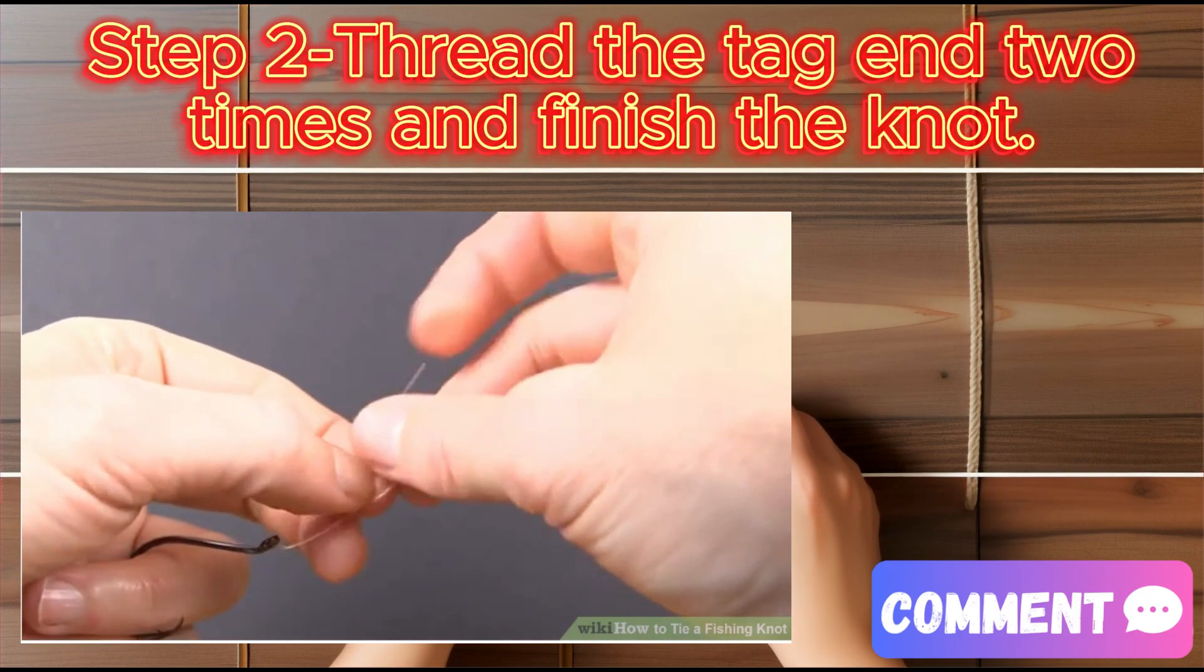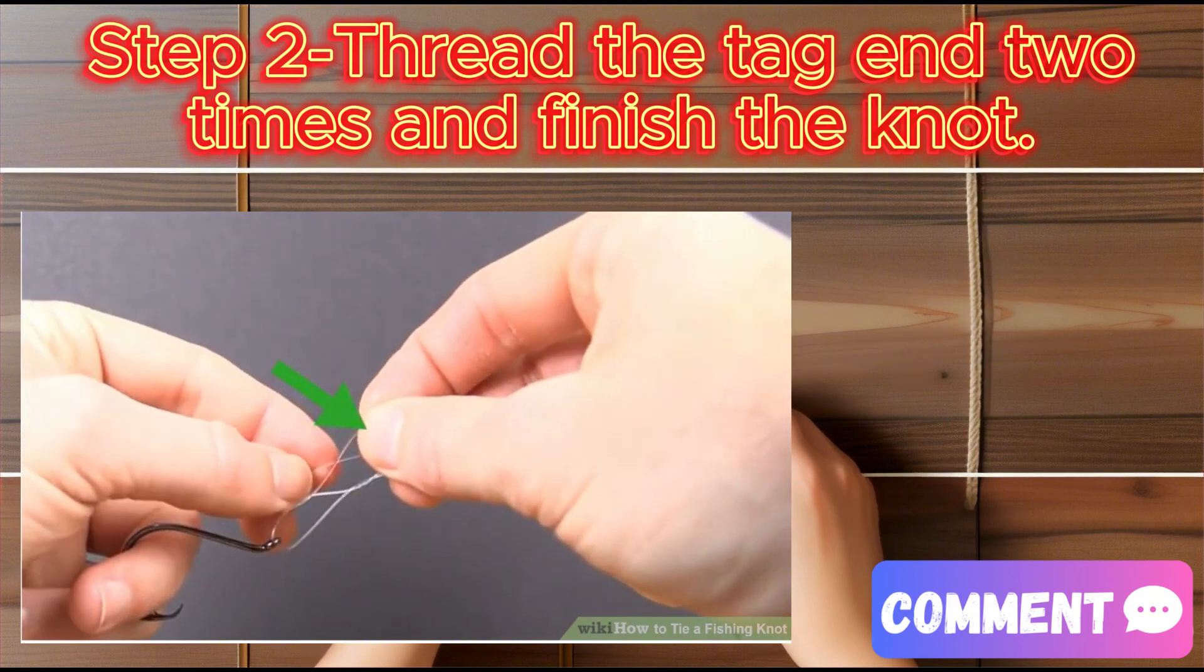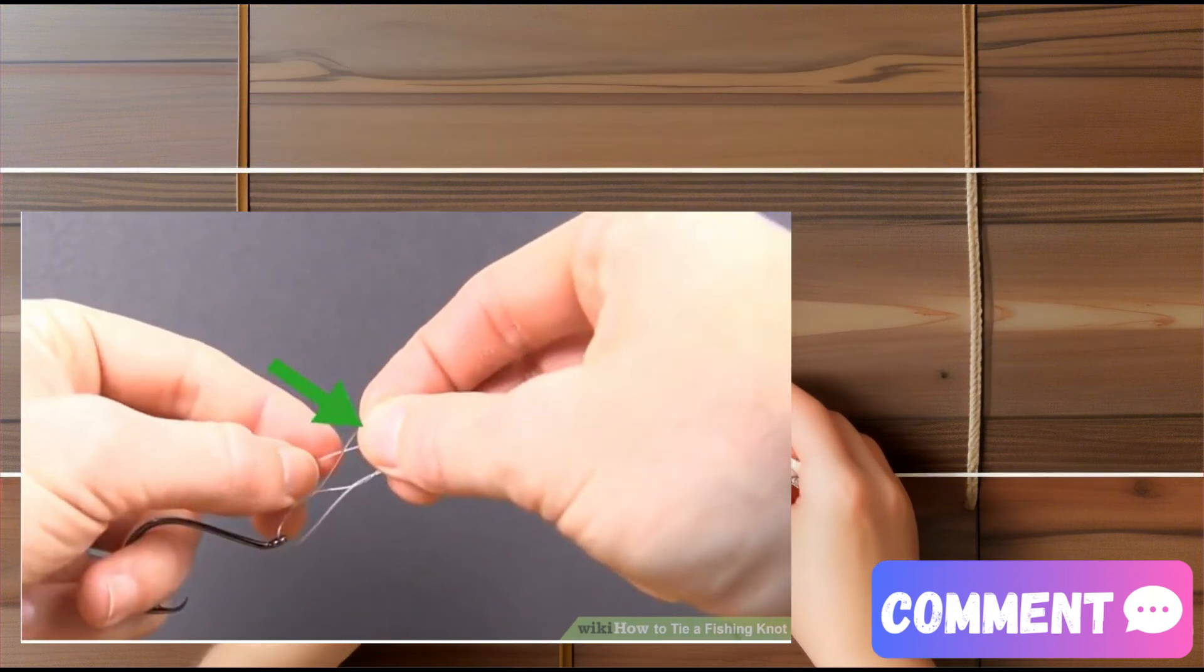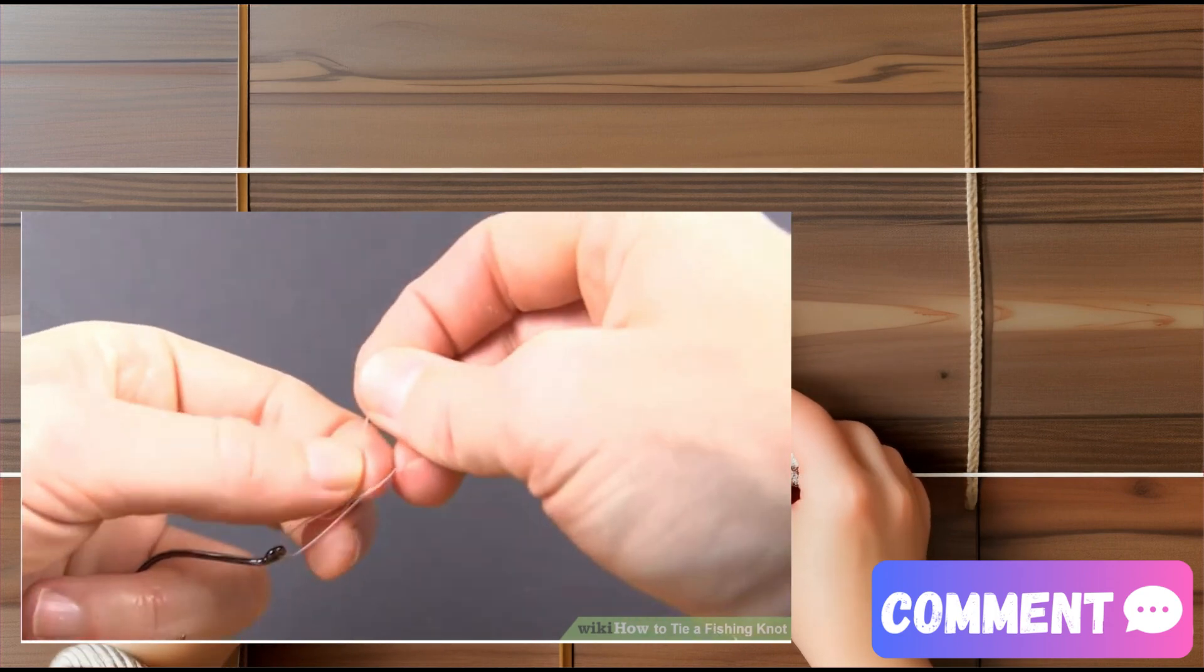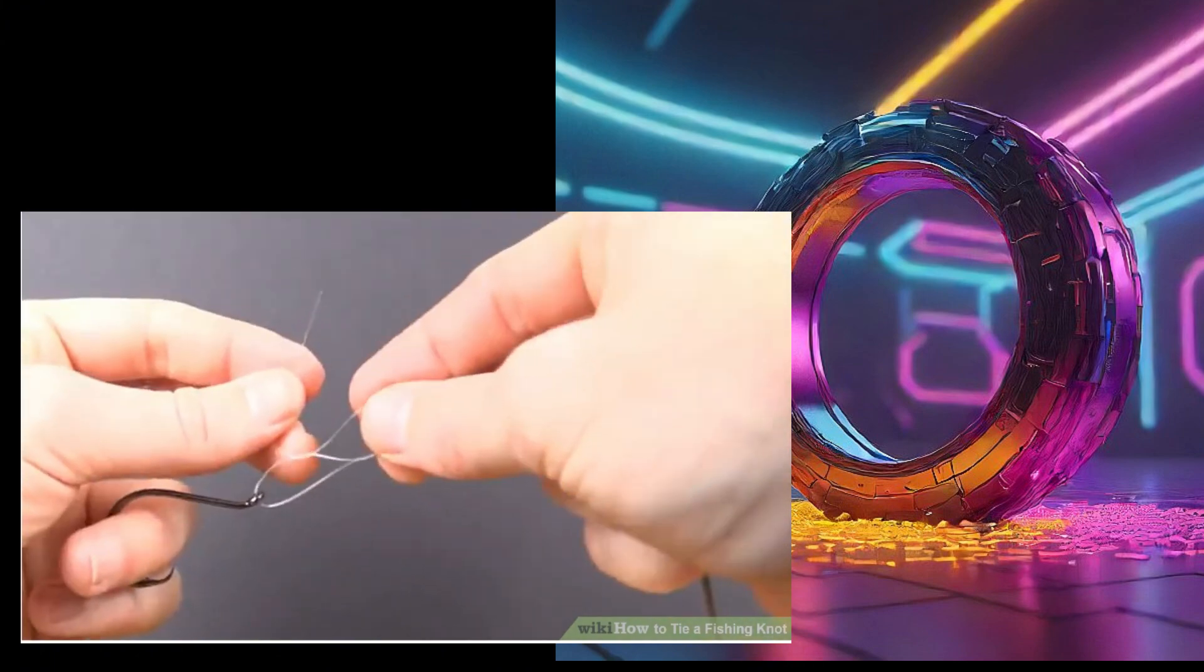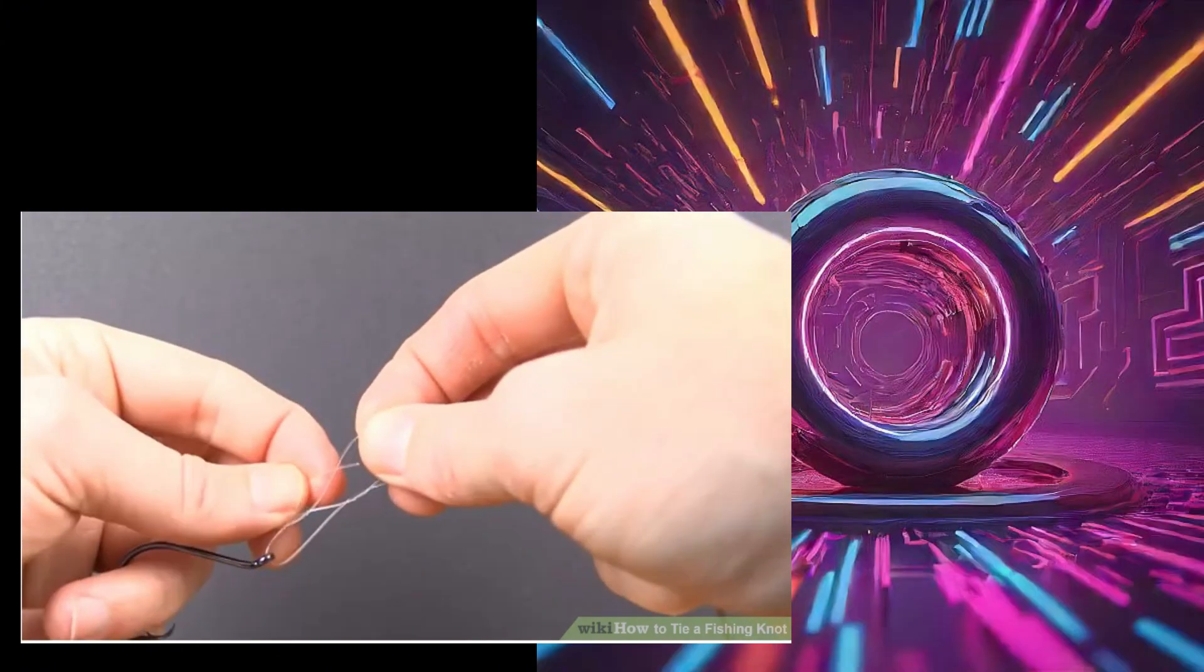Step 2: Thread the tag end 2 times and finish the knot. Feed the tag end through the top of the second loop and repeat this process twice. Then, lubricate the line with your mouth or a dab of water. Pull the tag end tight to close the knot and trim.